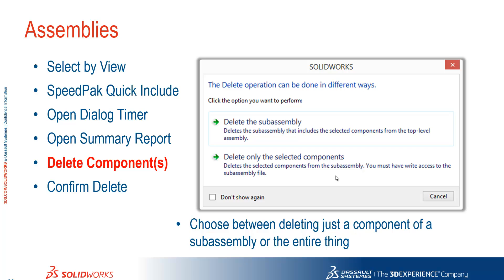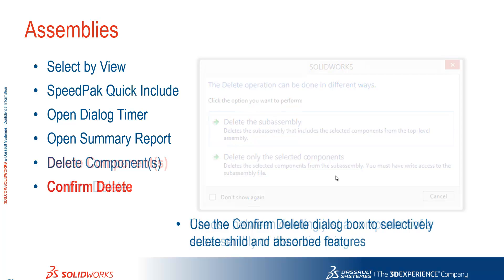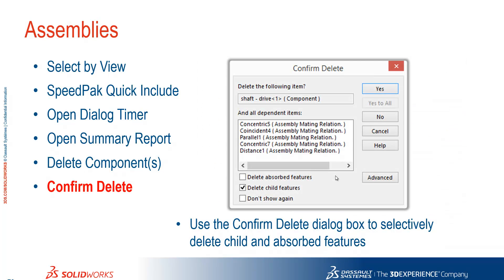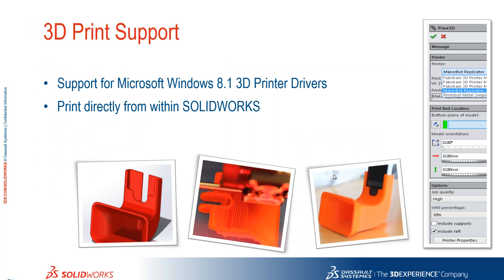A few individuals complained about the revision to the delete component functionality in previous releases, where it would delete a component from a sub-assembly instead of the sub-assembly itself. So now we're going to get a message box that asks us what we want to delete. Also within the confirmed delete box we can choose to selectively delete child and absorb features from within there as well.